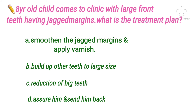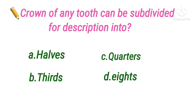Next question: an 8-year-old child comes to the clinic with large front teeth having jagged margins. What is the treatment plan? Option A smoothen the jagged margins and apply fluoride varnish, B build up other teeth to a larger size, C reduction of the big teeth, D no treatment required. The answer is option D — no treatment, as these jagged margins are mamelons which are a normal finding in a newly erupted incisor in an 8-year-old child.